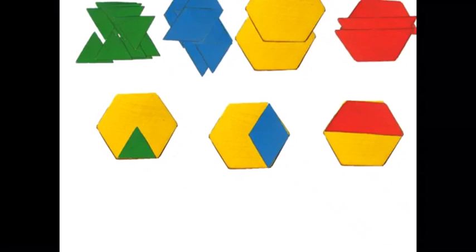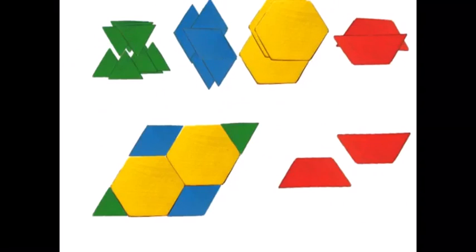Ask the students, 'Tell me what part of the hexagon is the green triangle,' or 'Tell me what part of the hexagon is the blue rhombus or the red trapezoid.' Moving along, you can also put objects together to create larger objects.